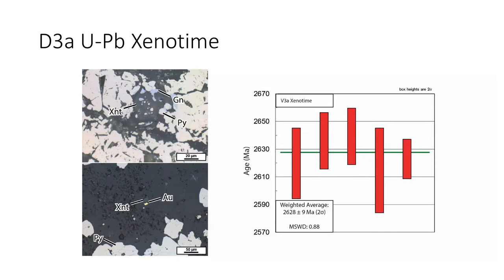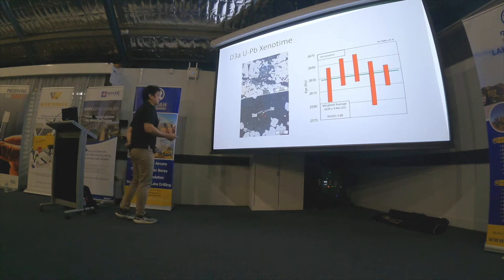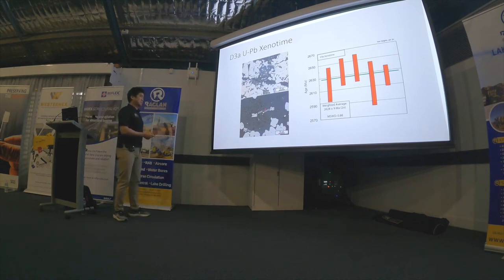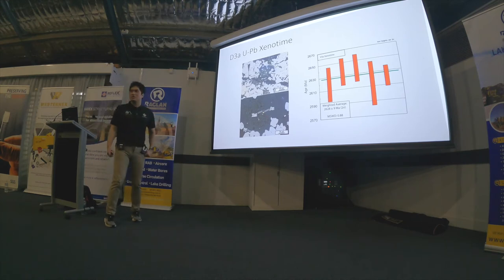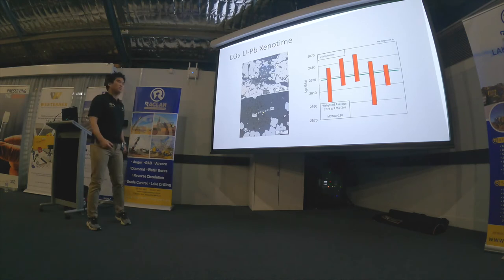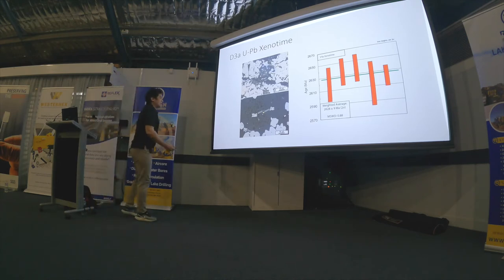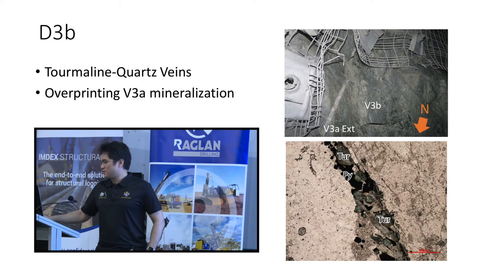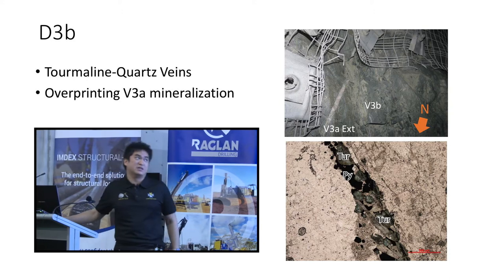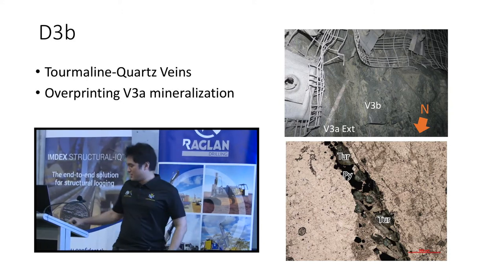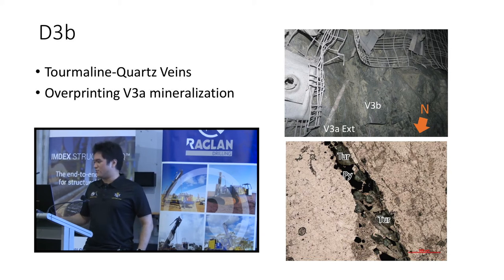I also dated the mineralization of this later V3a vein. I dated a xenotime directly in equilibrium with gold in thin section and got an average age of 2628 Ma, which is 30 million years younger compared to the previous D1b age. After the V3a veins, the last hydrothermal event in the Kanoona Bell deposit is late barren tourmaline-quartz veins that overprint the V3a mineralization.